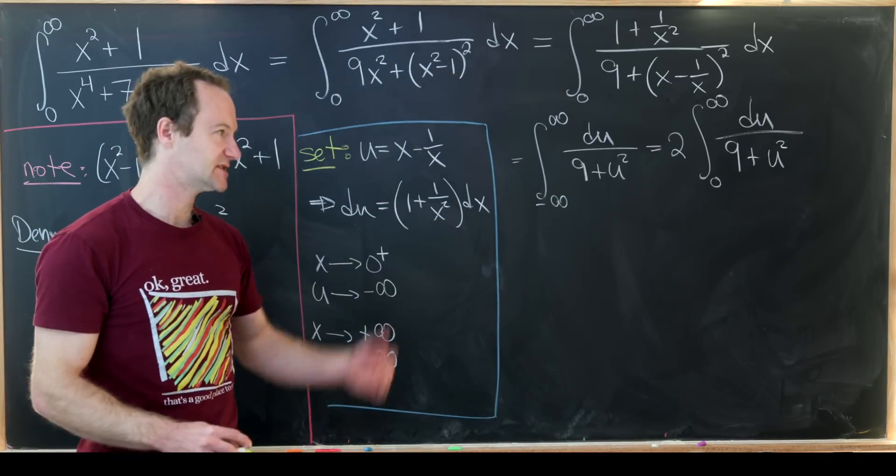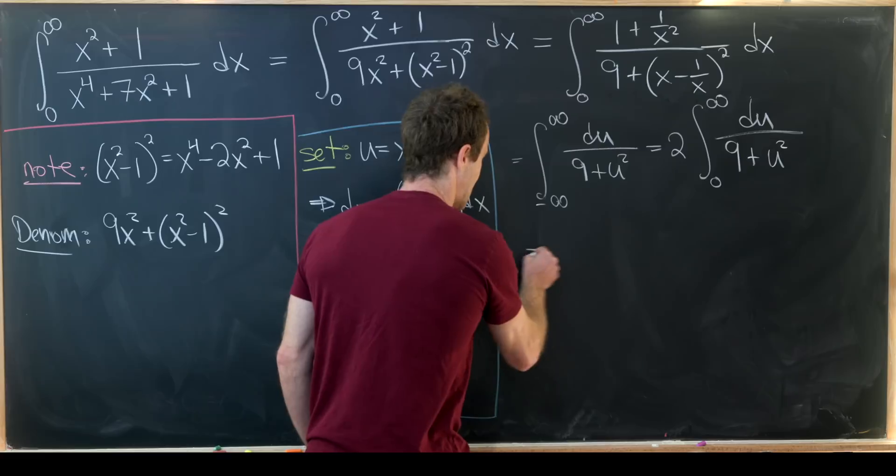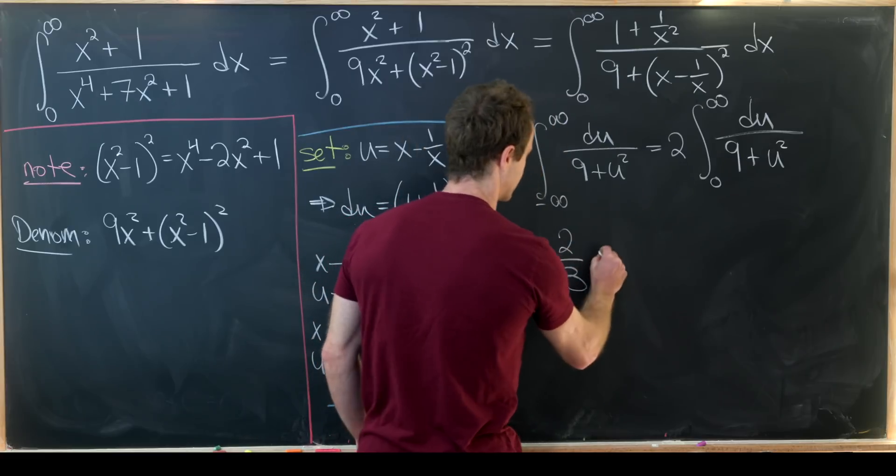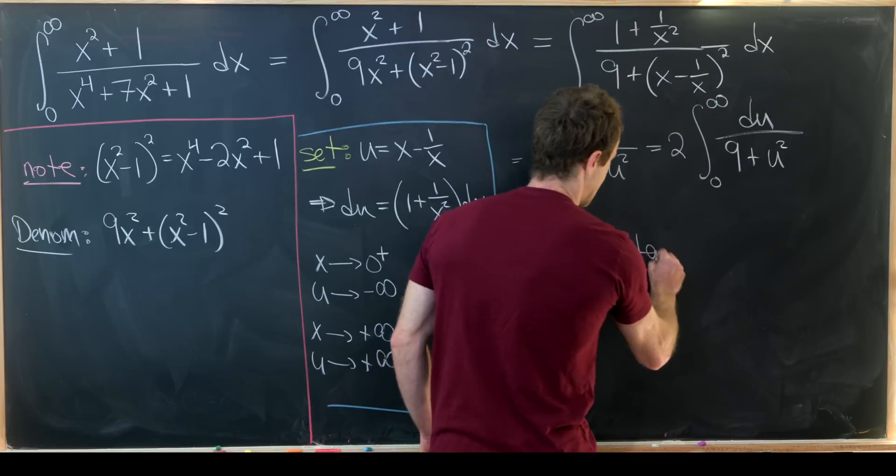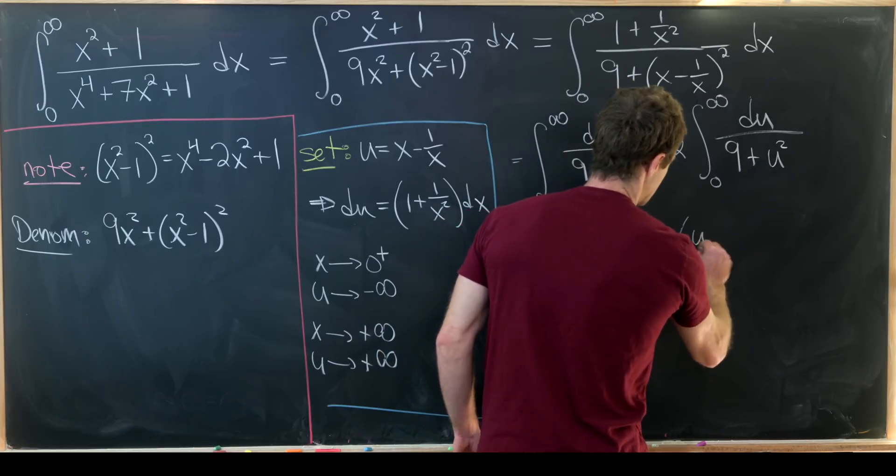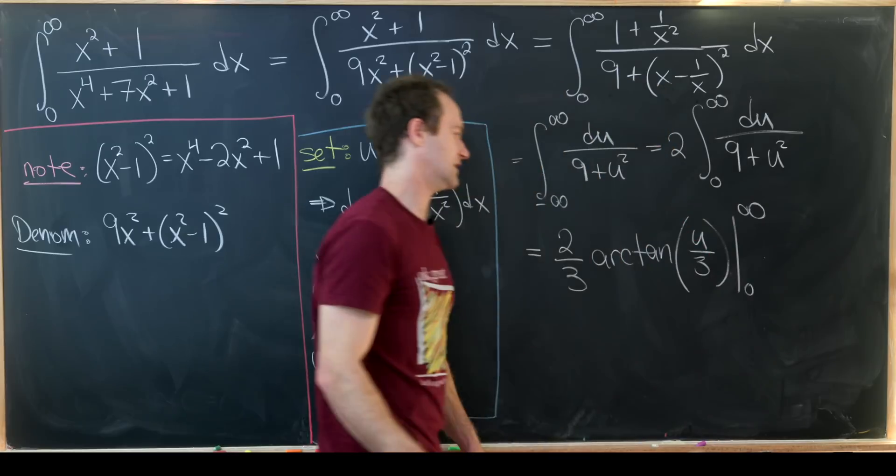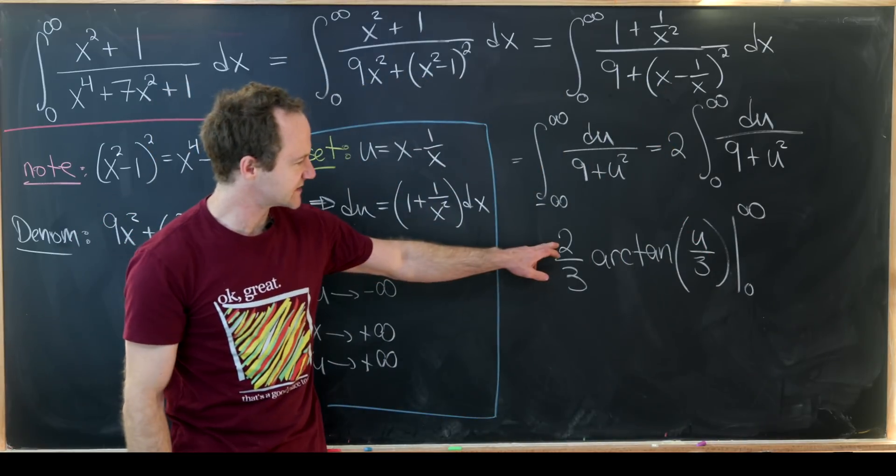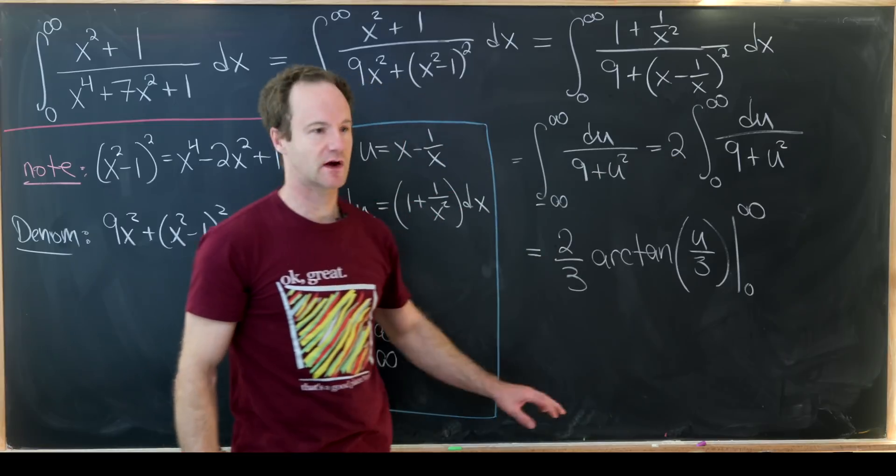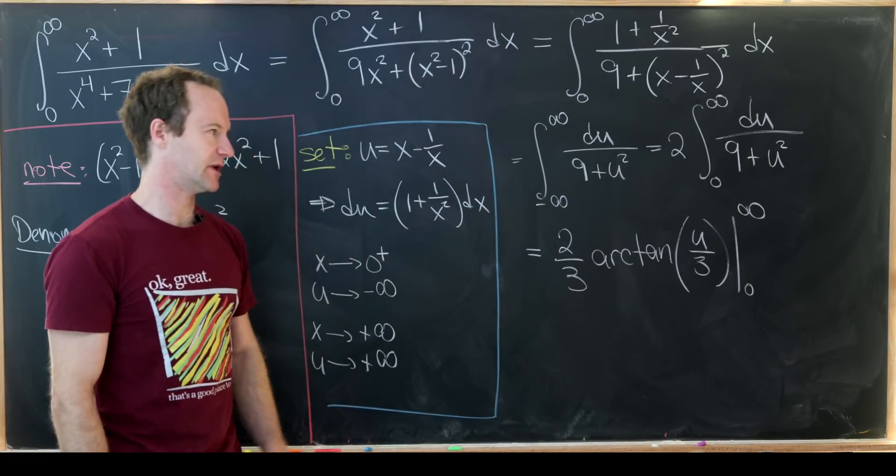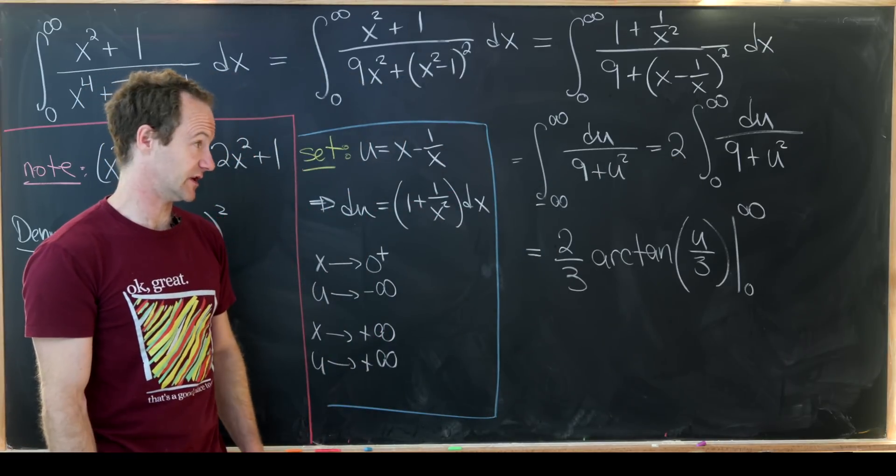Now, we know the antiderivative of that. That's going to give us 2 over 3 times the inverse tangent of u over 3, evaluated from 0 up to infinity. The 2 comes from this right here, and the 3's in the denominator come from taking that antiderivative.